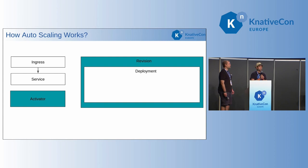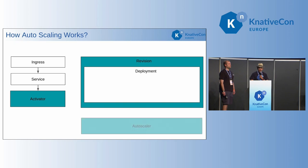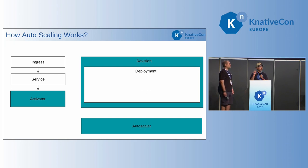I love the names we give these two components — activator and autoscaler. They sound like transformers. The activator is in charge: if there's no pod to receive a request, it goes into the middle. The endpoints get configured to capture that request. But somebody needs to get one pod up. This is Kubernetes — Kubernetes native. The activator needs to say it needs the first pod. How does that happen? Through the activator communicating with the autoscaler.